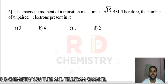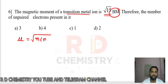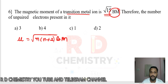Question 6: the magnetic moment of a transition metal ion is √15 BM (Bohr magneton). The number of unpaired electrons in the metal atom is? Using the spin-only formula: μ = √(n(n+2)) Bohr magneton, where n is the number of unpaired electrons.